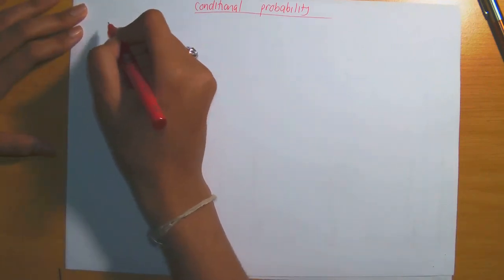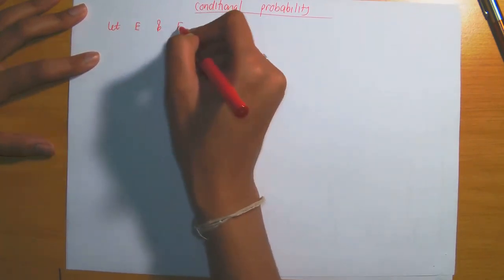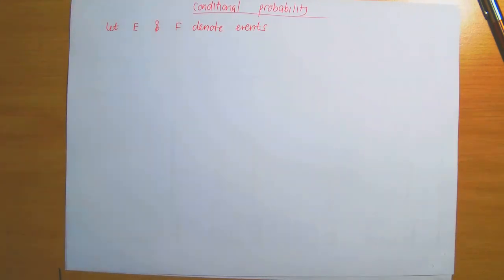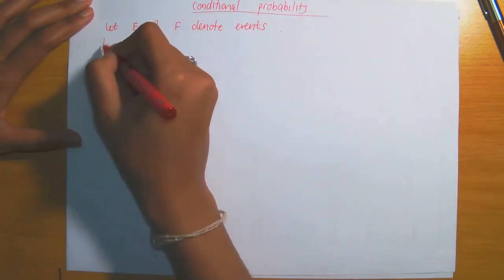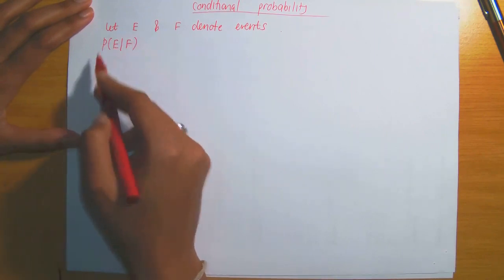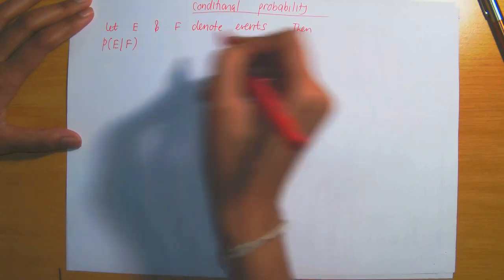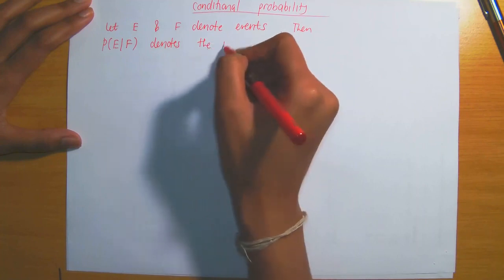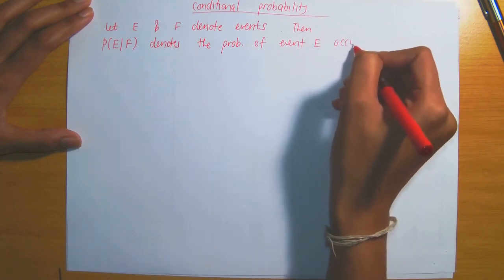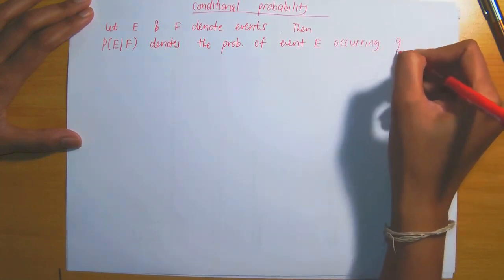Conditional probability is essentially used when you want to calculate the probability of some event E, given that you know that another event has already occurred. So if we have two events, let E and F denote events. The notation P(E|F) denotes the probability of event E occurring, given that F has occurred.